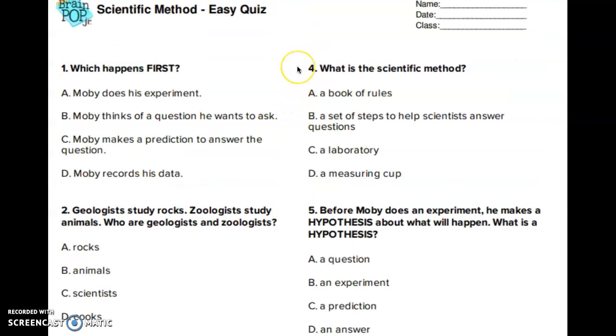Number 4. What is the scientific method? A. A book of rules. B. A set of steps to help scientists answer questions. C. A laboratory. D. A measuring cup.